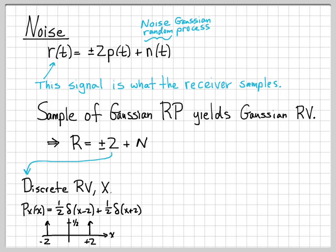More accurately, this is actually what we call the probability mass function, because there are discrete masses located on the X-axis at minus 2 and 2 — it's not really a density. So that's one part of this random variable R.